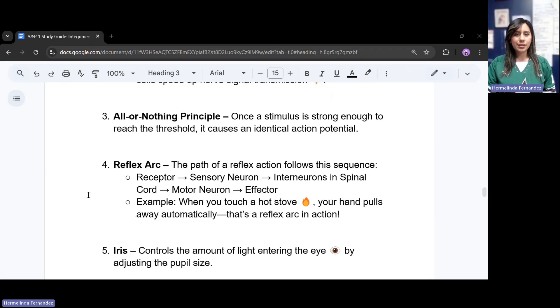The all or nothing principle. Once a stimulus is strong enough to reach the threshold, it causes an identical action potential. It's either going to happen or it's not.